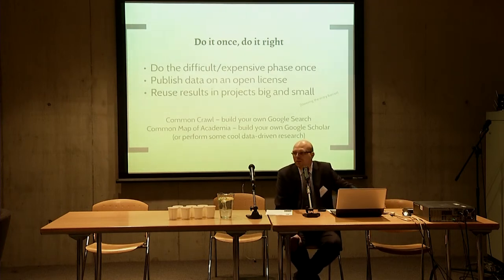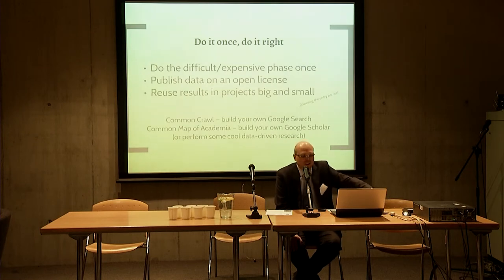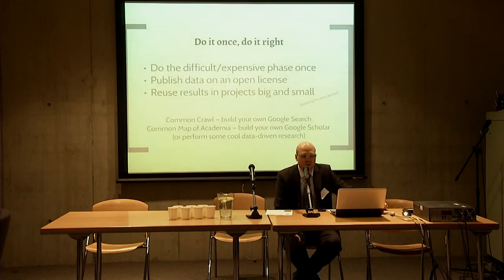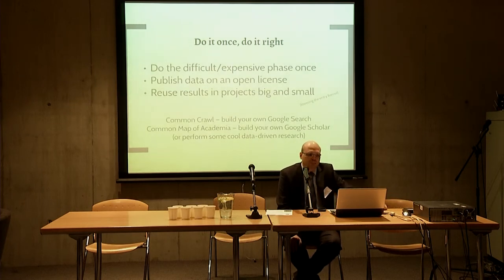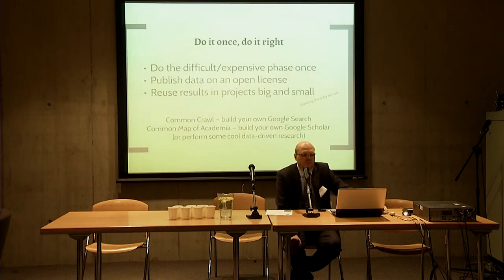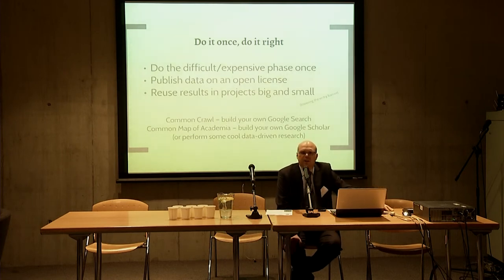One of the things one could try to do is to build their own Google Search. What we are trying to achieve with Common Map of Academia is to allow people to build their own Google Scholar, or perform research based on information that is usually difficult to come up with. When you have a smaller research question you would like to address, you might be discouraged to prepare all the data necessary for that. What we are trying to do is to lower this entry barrier for scientometric research.